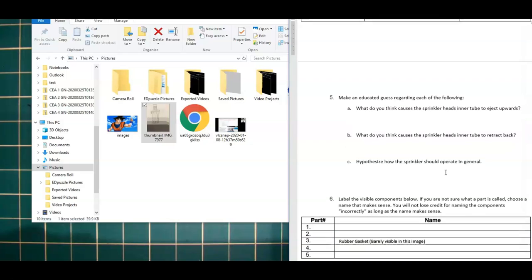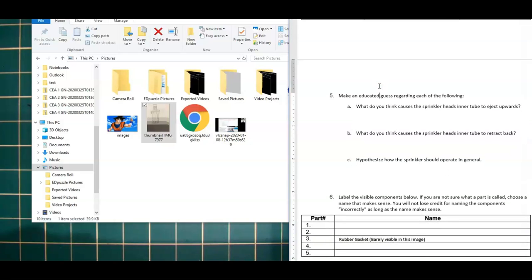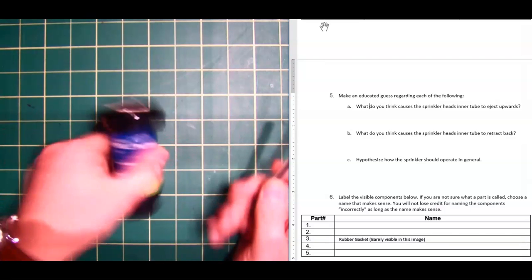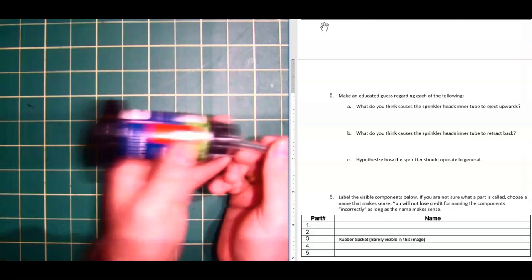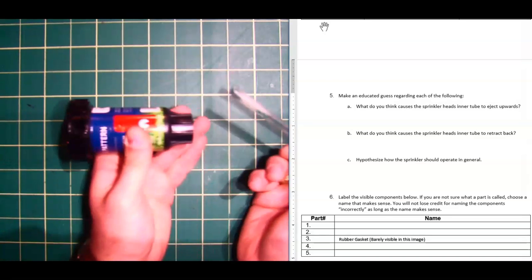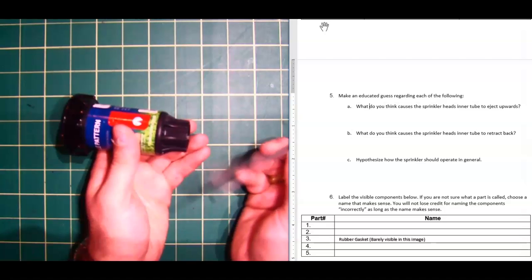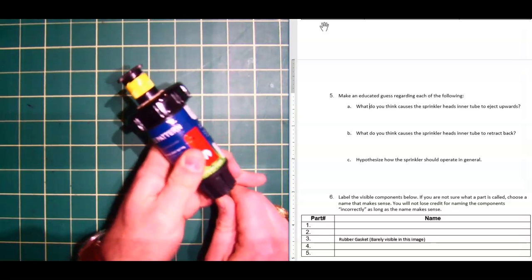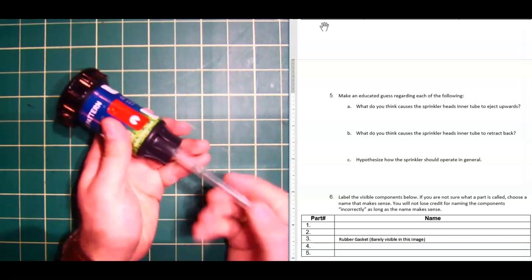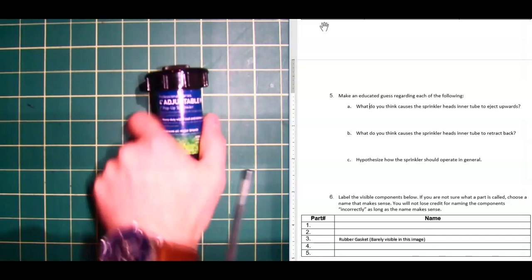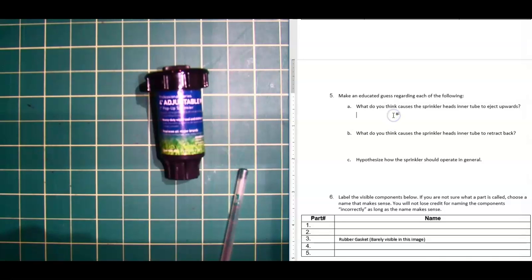And from there, we can move on to question five, which says to make an educated guess regarding the following. What do you think causes the sprinkler head's inner tube to eject upwards? And to answer that question, let's take a look at the sprinkler again, pushing the pin inside to make the head come up. Now, obviously, there are no pins in this system when it's working in the ground when you're watering your lawn. There's no pin in the ground underneath the sprinkler pushing it up to cause the head to come out. Something does cause the head to come out to water the lawn. What is that thing? And so you'll do your best to answer this question honestly. You're just creating a hypothesis on how you think this system works.